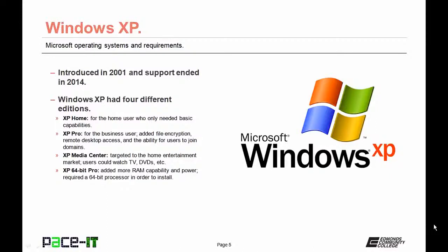Windows XP had four different editions. XP Home was for the home user, very basic with only basic capabilities. XP Professional was for the business user, adding file encryption, remote desktop access, and the ability for users to join domains.